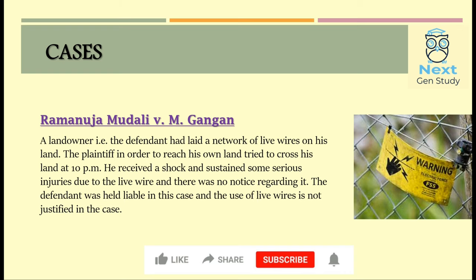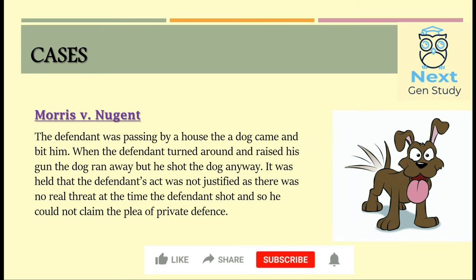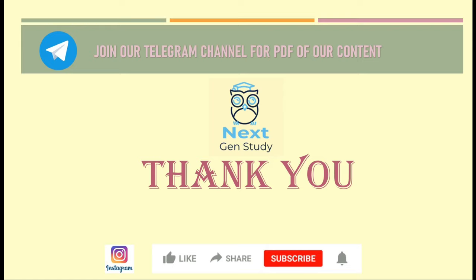The next case is Morris vs Snagant. In this case the defendant was passing by the plaintiff's house and the plaintiff's dog came toward the defendant. The defendant turned around and raised his gun, but the dog had already started running away. Still, the defendant shot the dog anyway. It was held that the defendant's act was not justified as there was no real threat at the time the defendant shot, and so he could not claim the plea of private defense.